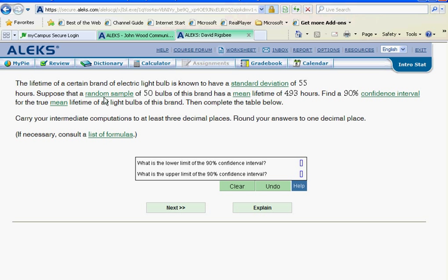Now suppose that a random sample of 50 bulbs of this brand has a mean. Once again, this mean is referring back to the sample. So this is a sample mean of 493 hours. They ask us to find a 90% confidence interval for the true mean of all light bulbs in this brand.